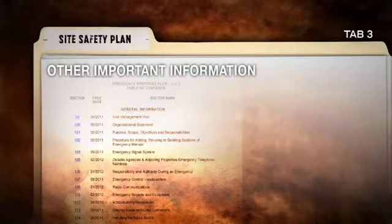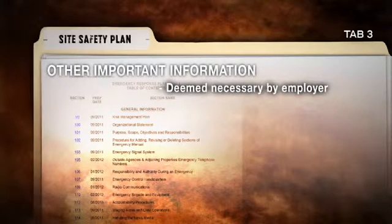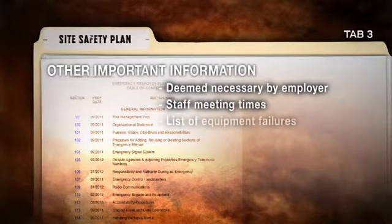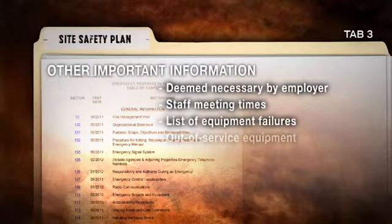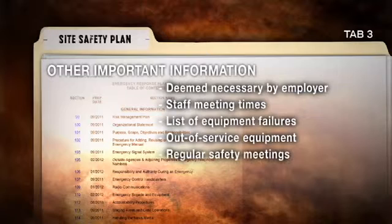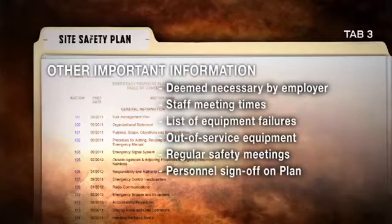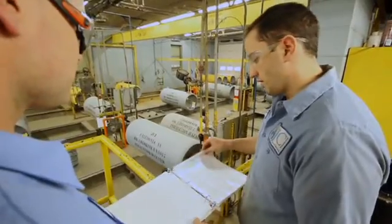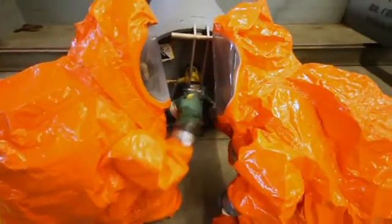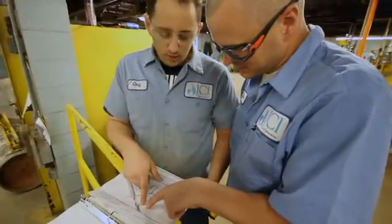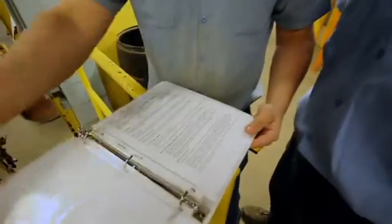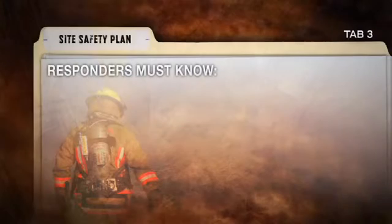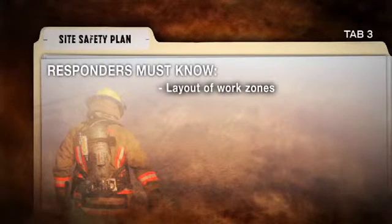Other important information included in the site safety plan encompasses anything deemed necessary by the employer, staff meeting times, and a listing of equipment failures and any out-of-service equipment. Regular safety meetings should be conducted for each work shift, and personnel should sign off on the site safety plan after each meeting. The site safety plan is a critically important document, especially during the course of an emergency response. The responder must know how to access the plan and how to implement it, as well as the layout of the work zones.